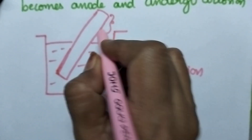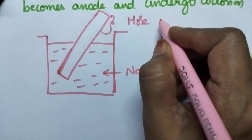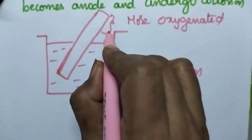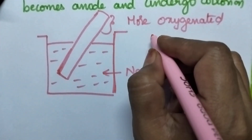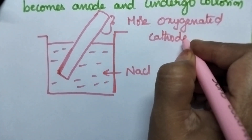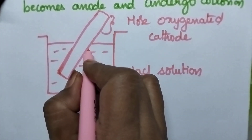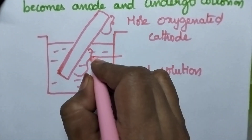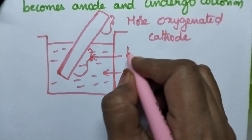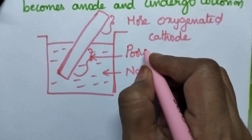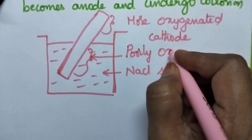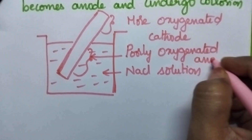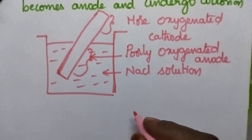This particular area is more oxygenated — it experiences high oxygen concentration. With the result, it becomes cathode and is protected from corrosion. And especially, if we carefully observe the bottom part, it experiences poor oxygen. So, it is the poorly oxygenated part and becomes anode and undergoes corrosion.